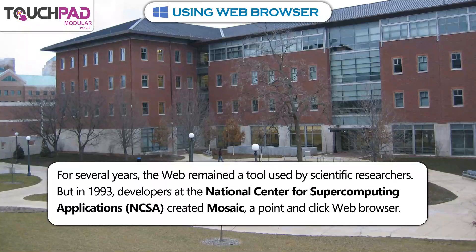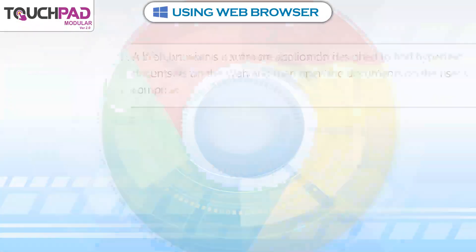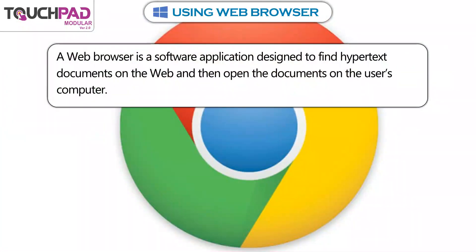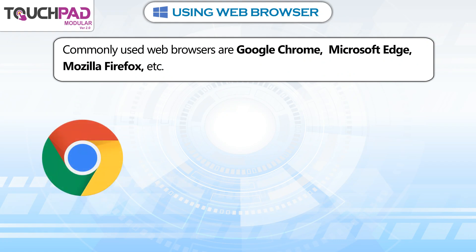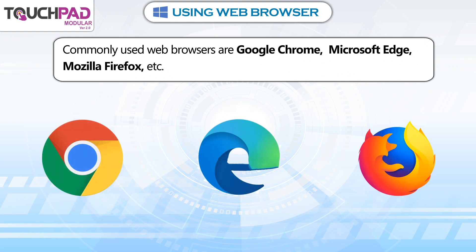A point and click web browser. A web browser is a software application designed to find hypertext documents on the web and then open the documents on the user's computer. Commonly used web browsers are Google Chrome, Microsoft Edge, Mozilla Firefox, etc.